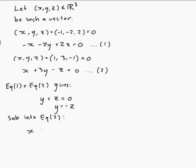So let's see, x plus 3 times minus z minus z is 0, so x minus 4z is 0, so x is equal to 4z.